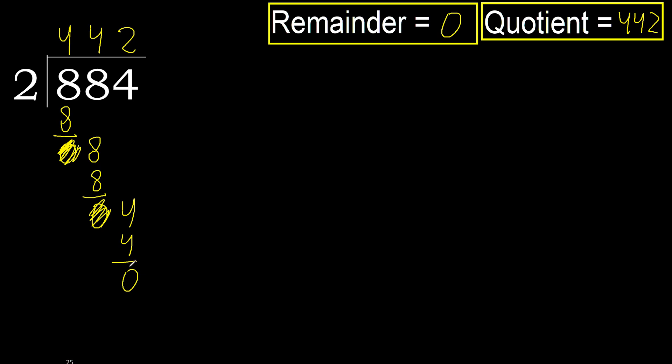Ok, 0 remainder, therefore 884 divided by 2 is 442.